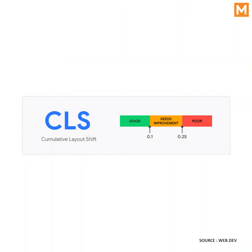So that is Cumulative Layout Shift. Google has actually benchmarked it by giving it a score — your Cumulative Layout Shift score should not be more than 0.1. Google calculates this by figuring out how much proportion of the content on your screen shifted due to several reasons.